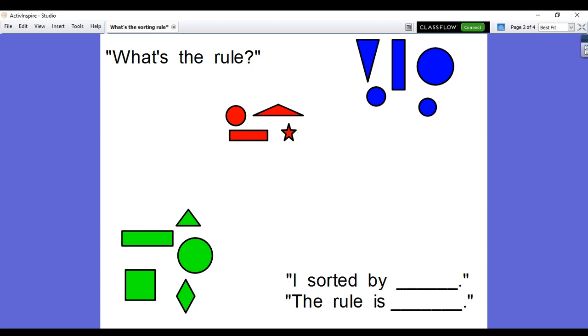Some language we can use while we are thinking about this is the word rule. We know what rules are, and sometimes we also think of sorting rules or the things we followed to sort the shape. So my question to you is, what's the rule?